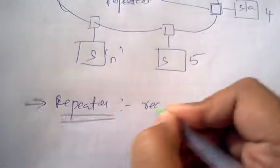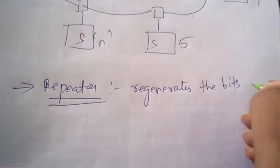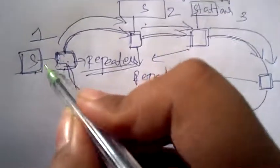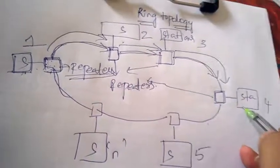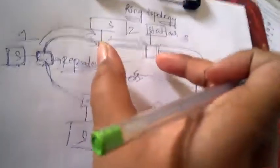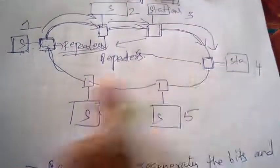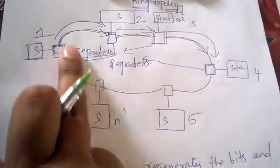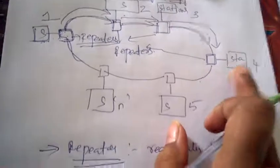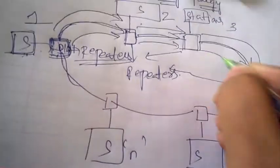The repeater regenerates the bits and passes them forward. Station 1 wanted to send information to station 4, but it can't do so directly because there is no direct connection. The intermediary stations between station 1 and station 4 help the information travel from source to destination. The bits, along with the information, are transferred from one repeater to another.